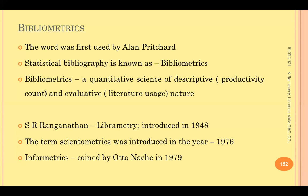In descriptive nature, we study about the productivity count — the total number of literature published in a particular subject, how many documents were published each year, in which language, and in what bibliographical forms. Then comes the evaluative nature, the second part of bibliometrics, where we measure literature usage — to what extent a selected piece of literature has been cited by others, which is citation analysis. Both productivity count and literature usage are two sides of the same coin called bibliometrics.